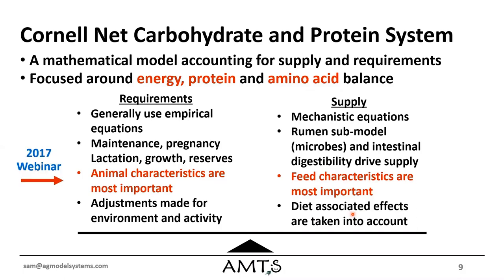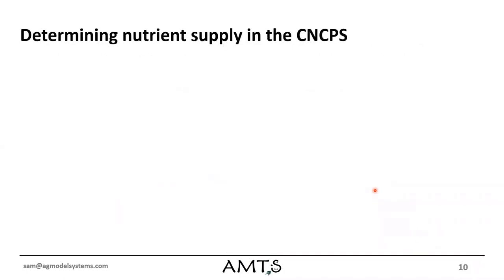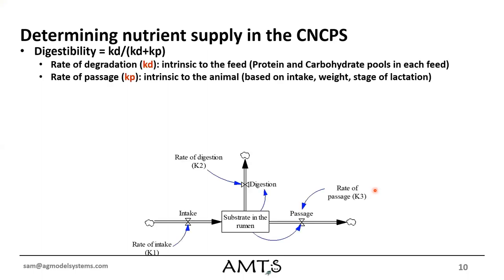In my 2017 webinar I focused a lot more on animal characteristics. In this webinar we're going to focus more on feed characteristics. The most central equation in the model is fairly simple: KD over KD plus KP. This is what we use to determine the digestion of a beginning nutrient. KD is the rate of degradation — intrinsic to the feed — and we have a KD for each protein and carbohydrate pool in each feed.